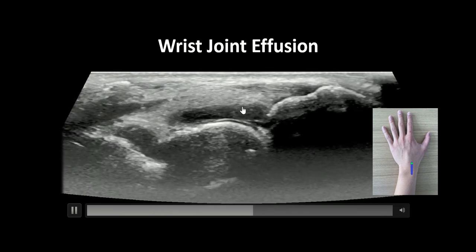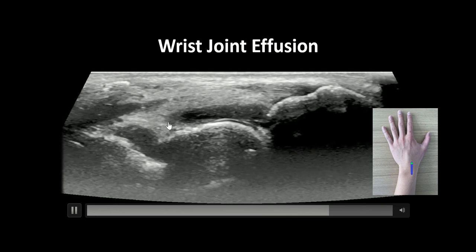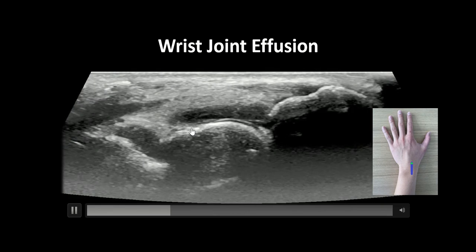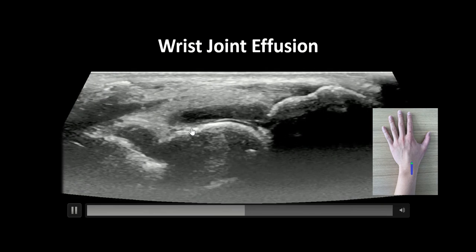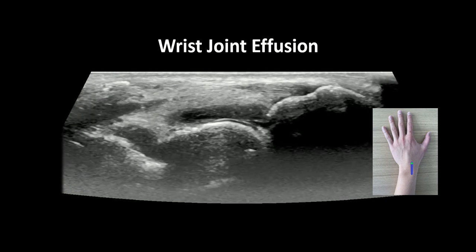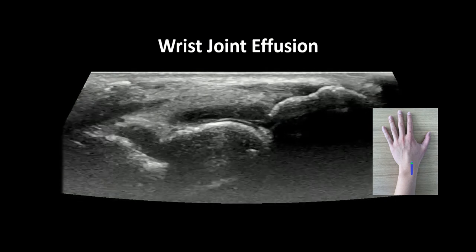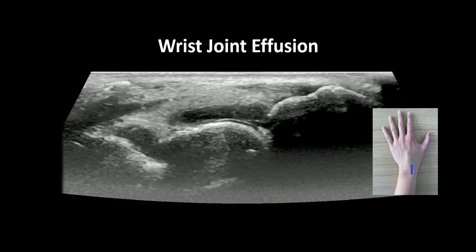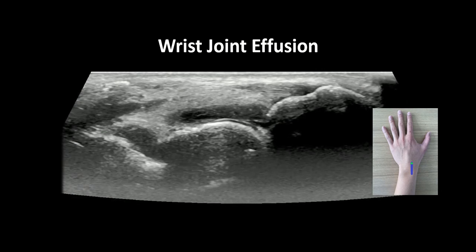Note this anechoic fluid anterior to the scaphoid — this represents a wrist joint effusion. Contrast this to a normal wrist, where minimal to no fluid should be seen.